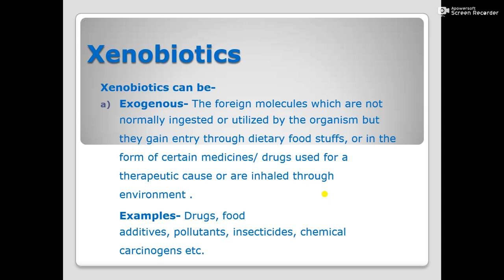There are some examples you can see on the screen: drugs are xenobiotics, food additives are xenobiotics, pollutants are xenobiotics, insecticides are xenobiotics, and chemical carcinogens are also xenobiotics. All these are foreign molecules because they can be ingested from the outside environment — in the form of drugs, food, additives, or pollutants, which can be inhaled from outside.